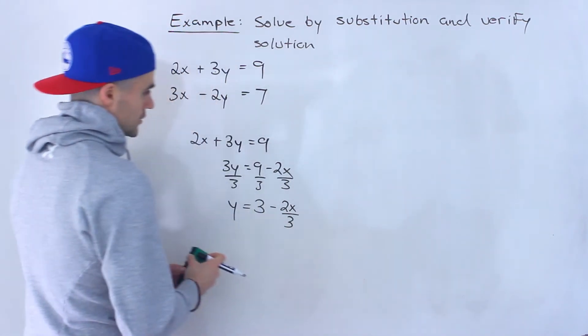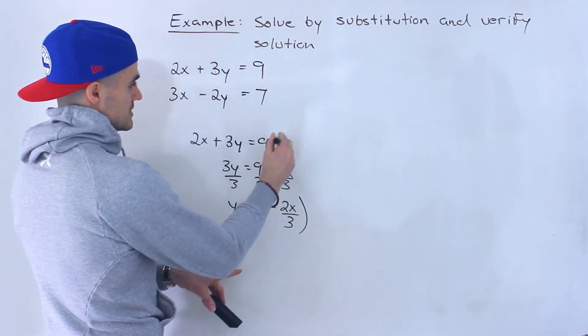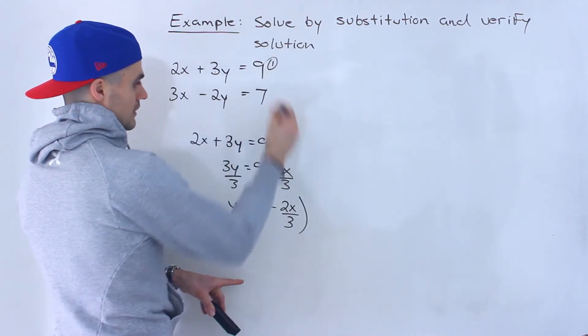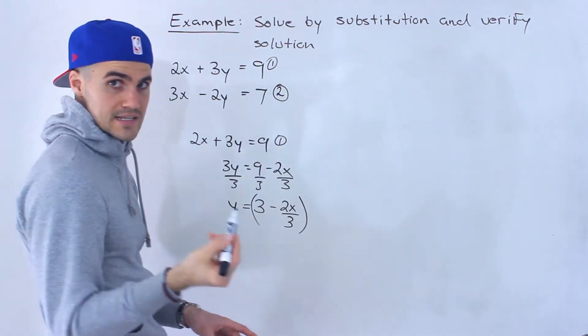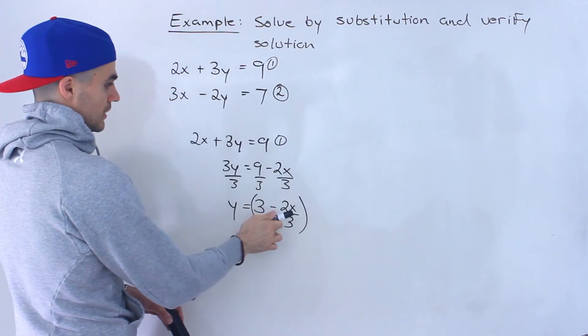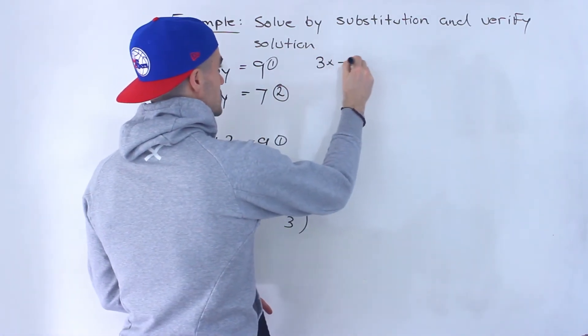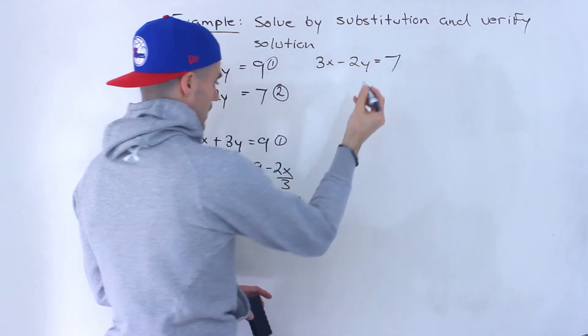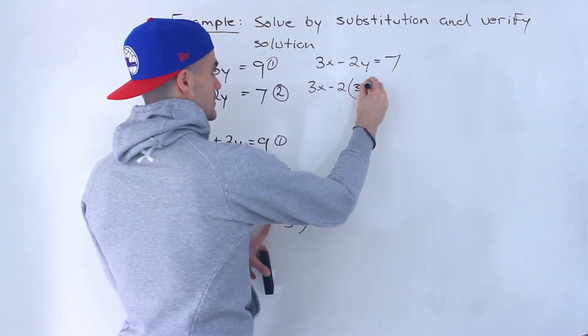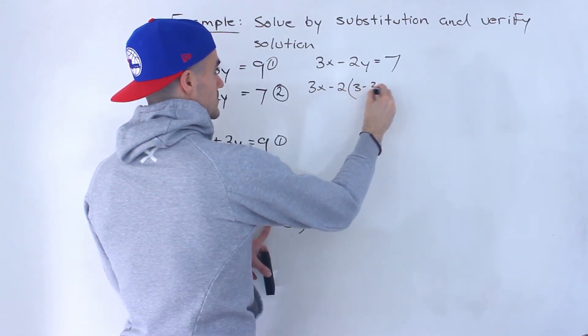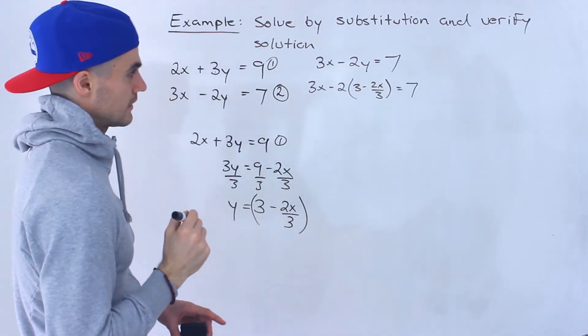So now what I'm going to do is I'm going to take this expression, remember this is still the first line, I'm going to take this and I'm going to plug it into the second line, into the other line. So I'm going to plug in this for this y value. So if we do that, we'll have 3x minus 2y equals 7. Let's rewrite the line. And then we'll have 3x minus 2, 3 minus 2x over 3 equals 7, like that.